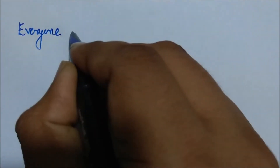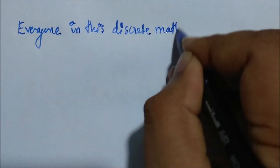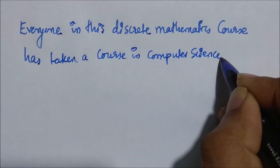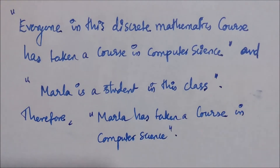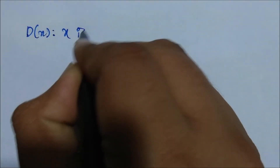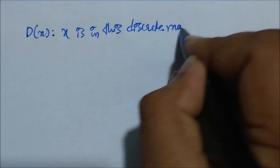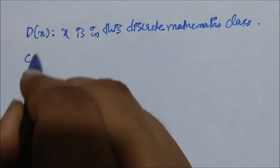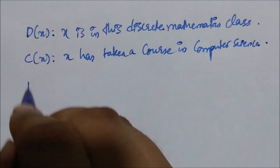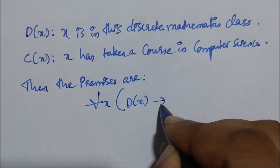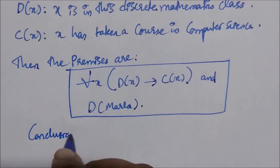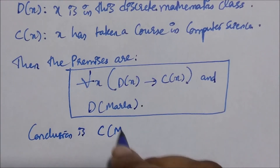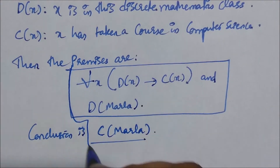Let's see another example where we want to show the argument is valid. The argument: everyone in this discrete mathematics class has taken a course in computer science, and Marla is a student in this class; therefore, Marla has taken a course in computer science. Let D of X represent 'X is in this discrete mathematics class' and C of X represent 'X has taken a course in computer science'. The premises are: for all X, D of X implies C of X, and D of Marla. The conclusion is C of Marla.